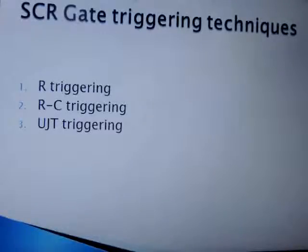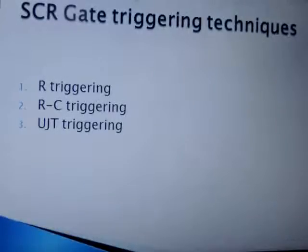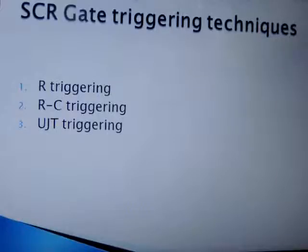Normally we use gate triggering because it is more economical, convenient, and easy to design, and we get more accuracy with this technique. Conventionally, three methods are used: resistance triggering or R-triggering, where resistive circuits provide the gate pulse; RC triggering, using resistance and capacitance; and uni-junction transistor (UJT) triggering, which uses UJT characteristics to generate a firing pulse for the SCR.